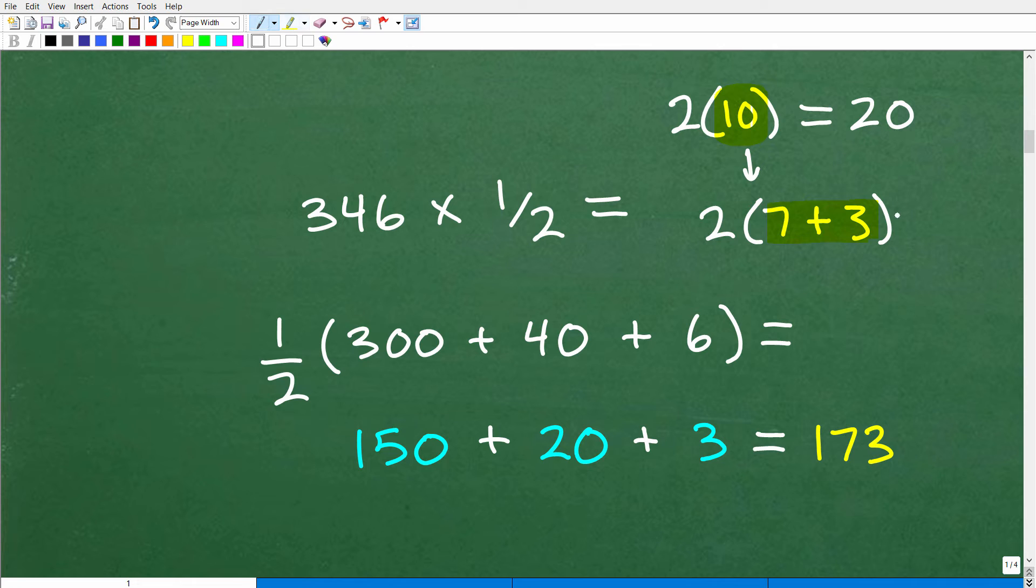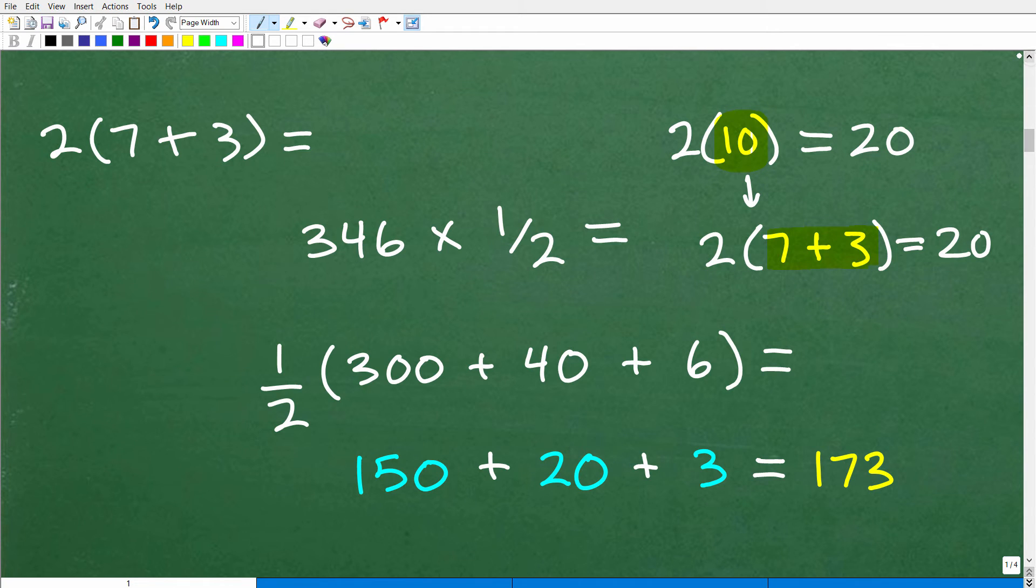Right. So 2 times 7 plus 3. Well, the answer, because 7 plus 3 is, in fact, 10, should be 20. But let me show you how this works here. So this is 2 times 7 plus 3. There is a property, one of the most important properties, probably, in algebra. They're all important. But this is so, it's one of the most probably commonly used properties. And it's called the distributive property.